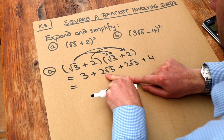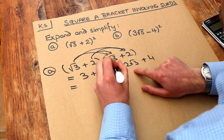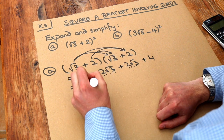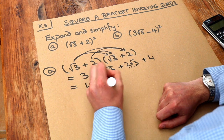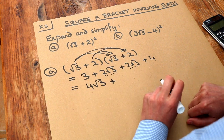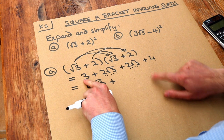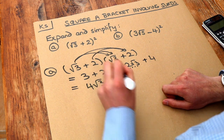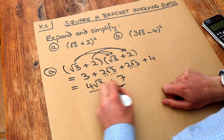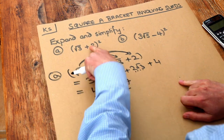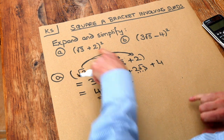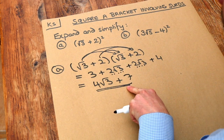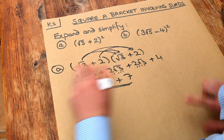2 lots of root 3 plus 2 lots of root 3 is 4 lots of root 3. Then we add the non-surd things together: 3 plus 4 is 7. So that's the final answer, and if you were to type that into a calculator it would confirm the expression.